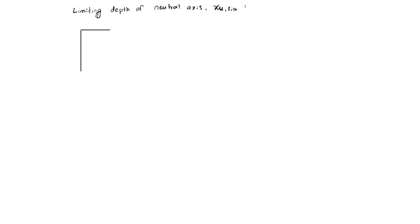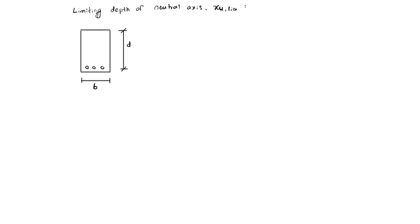In the beam, if steel is provided at the bottom, this is the width of beam b and this is the effective depth up to the center of reinforcement. This depth is called effective depth.